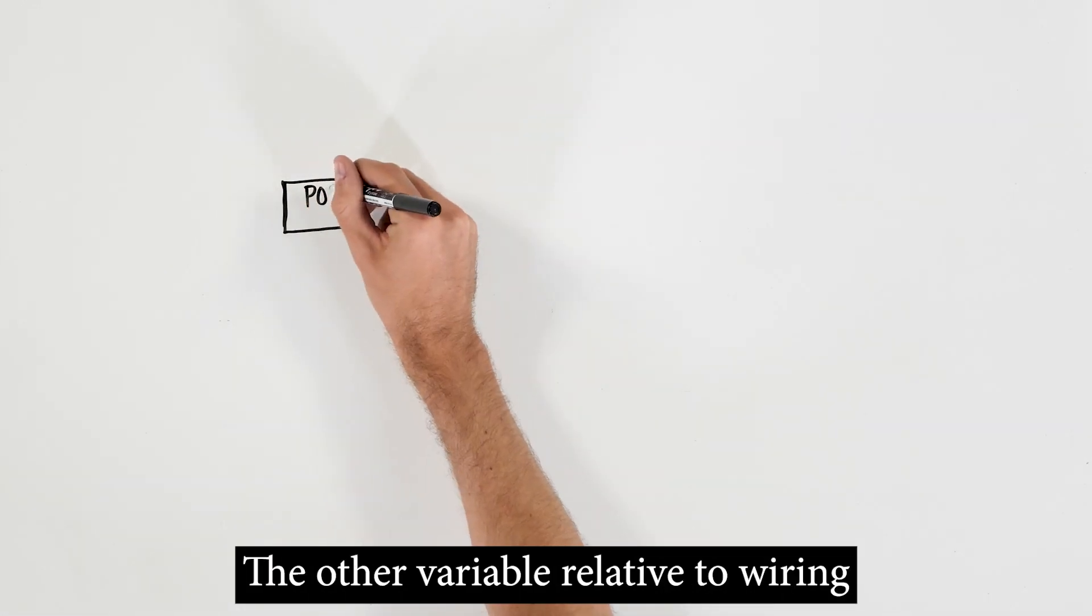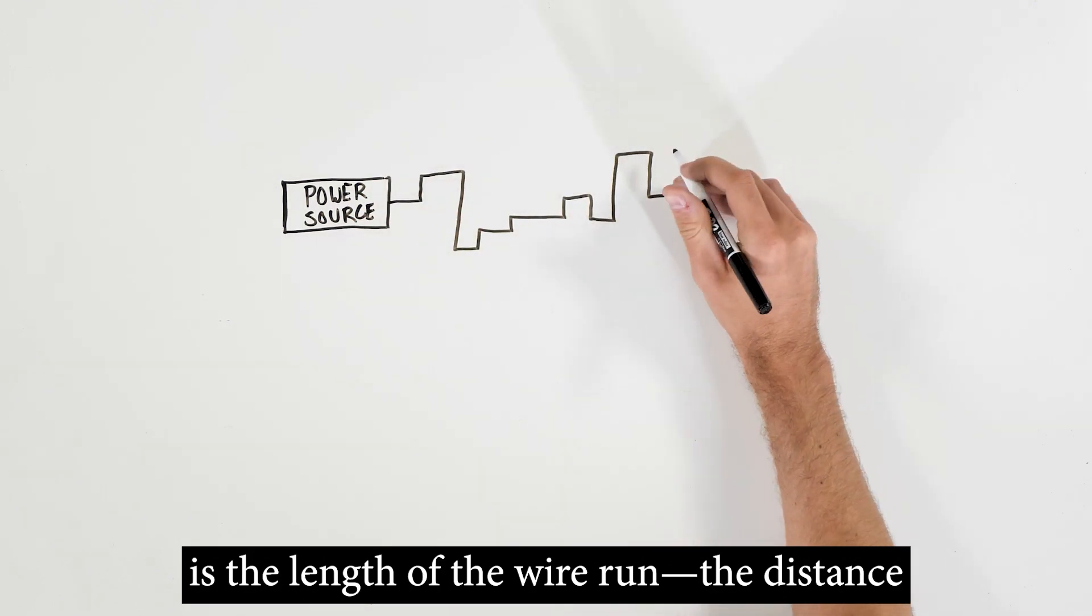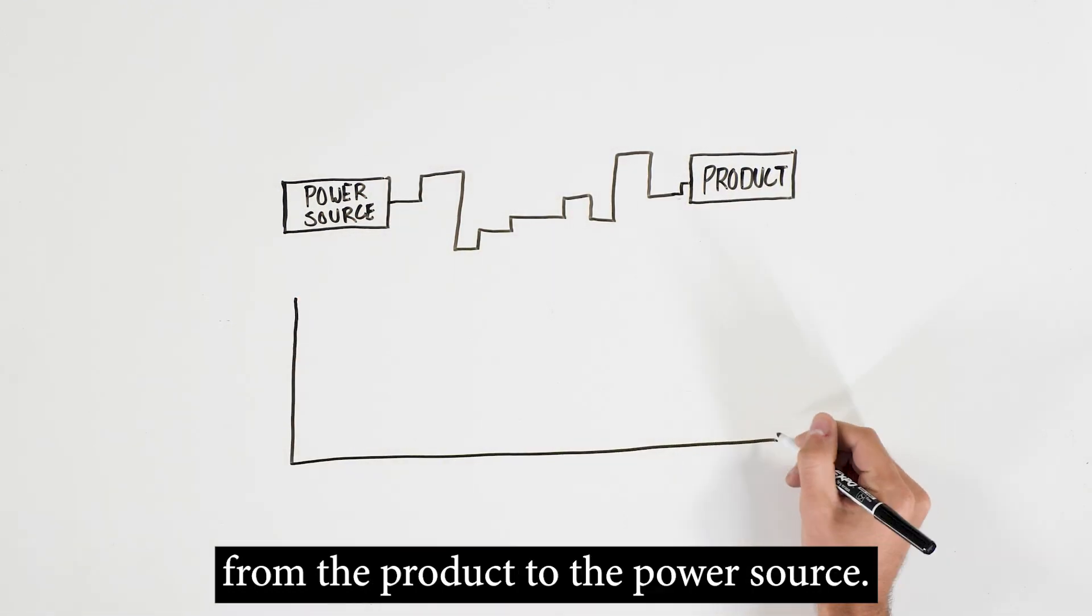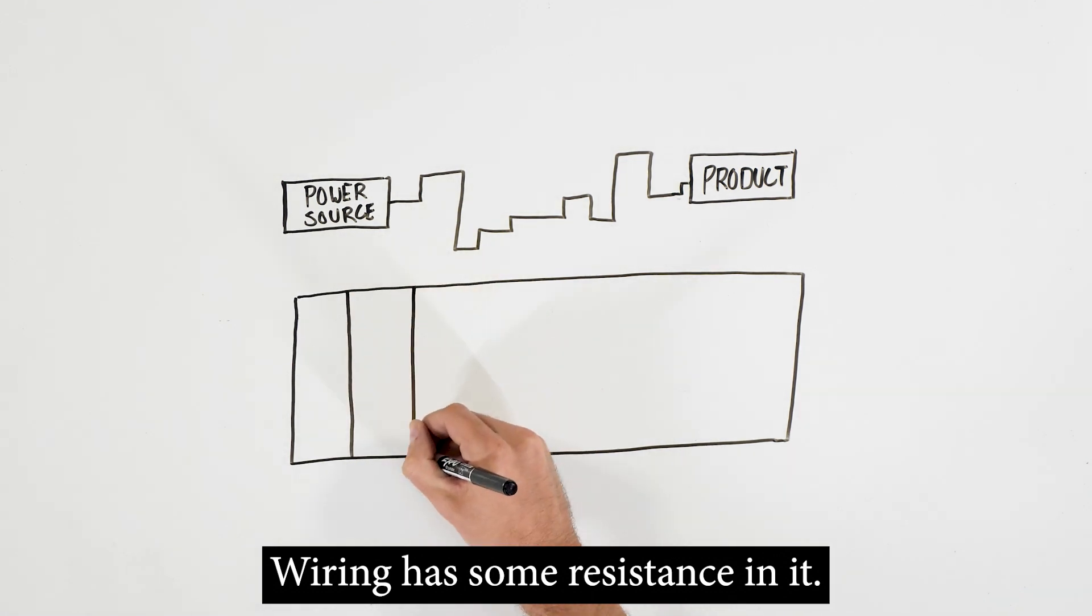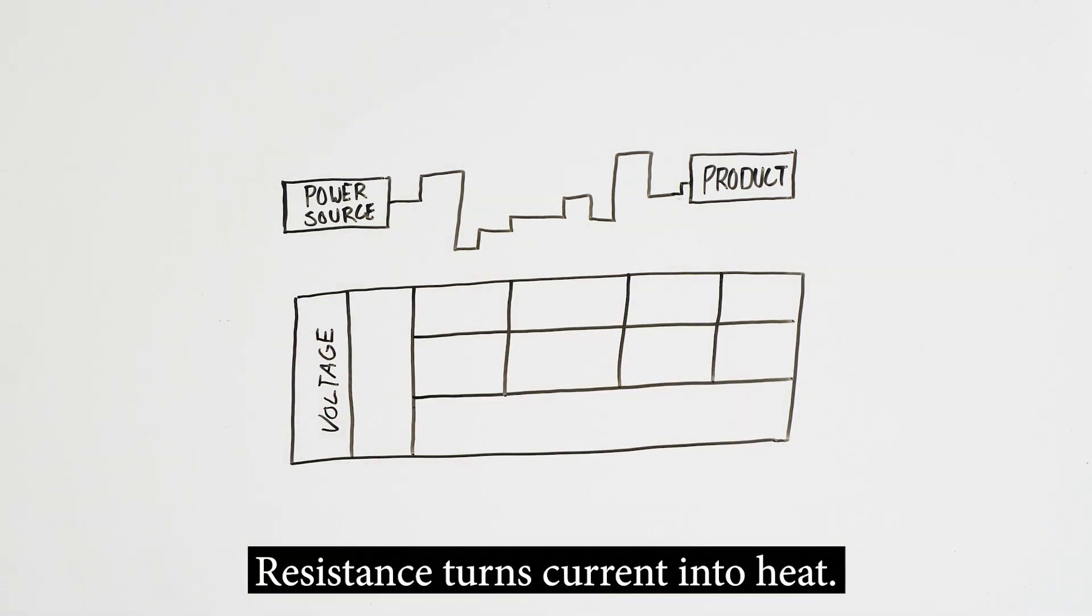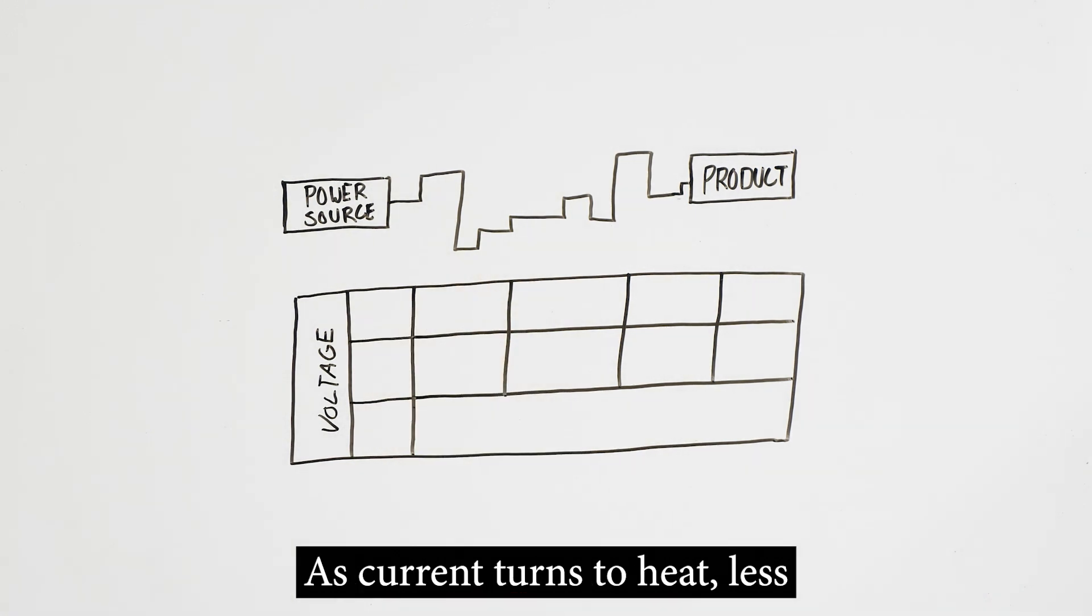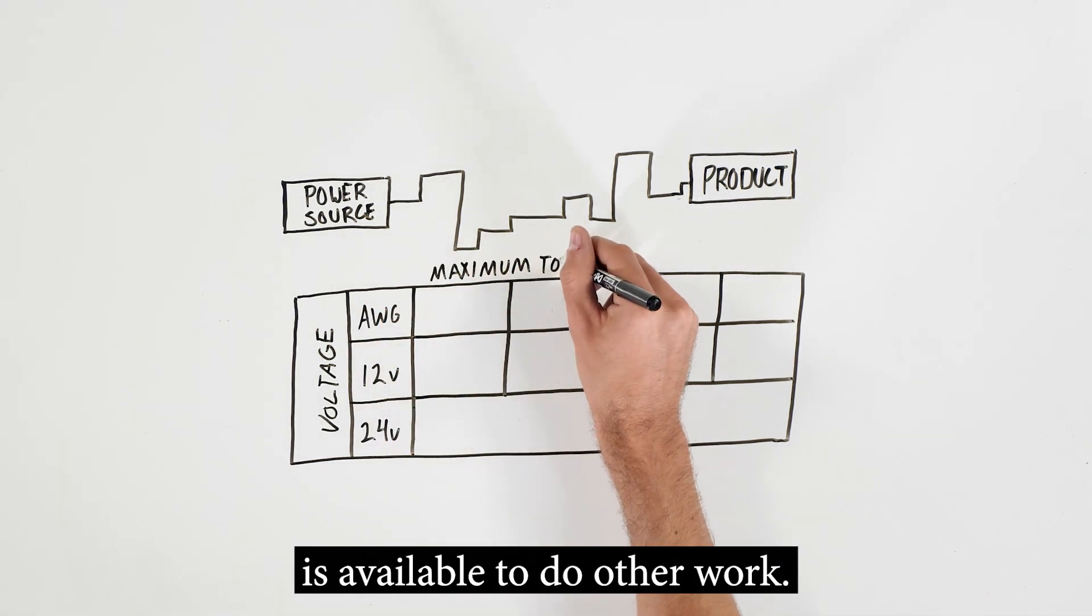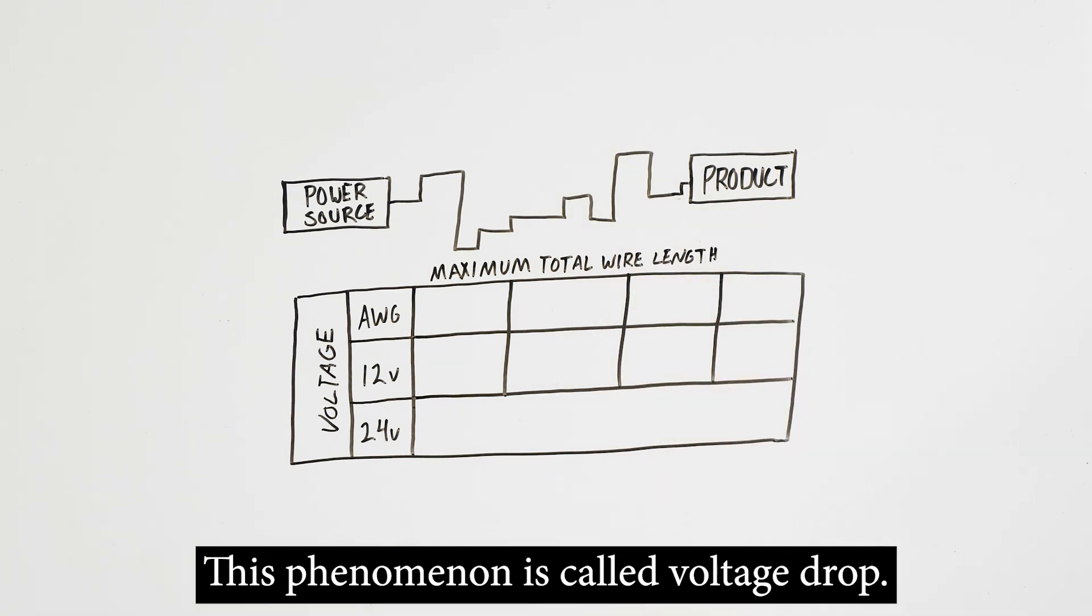The other variable relative to wiring is the length of the wire run, the distance from the product to the power source. Wiring has some resistance in it. The longer the wire run, the more resistance there will be. Resistance turns current into heat. As current turns to heat, less is available to do other work. This phenomenon is called voltage drop.